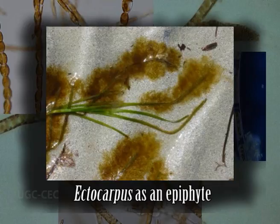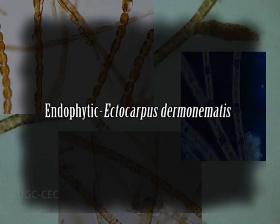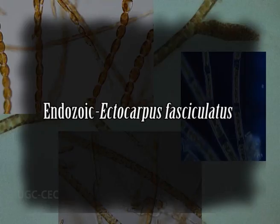Some species also grow as epiphytes on other algal genera. Species like Ectocarpus fasciculatus has been found growing on fins of certain fishes. Some species are endophytic, for example Ectocarpus dermonimatus, or even endozoic like Ectocarpus fasciculatus, wholly or partially. Some endophytic species are also known to produce galls in other algal species.